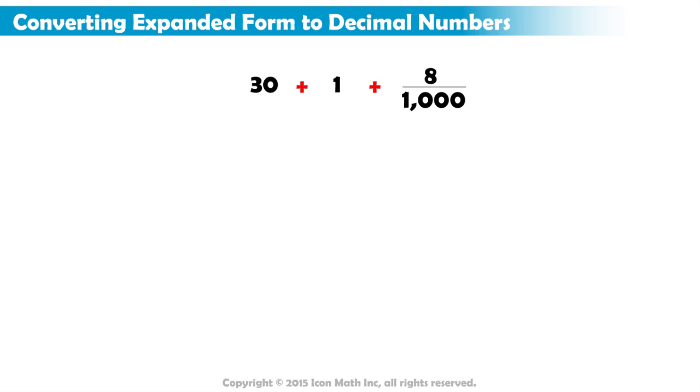This is simple. Just start with the numbers that have no denominator. These will make up the whole number part. 30 has one zero, so it is in the tens place. And 1 has no zeros, so it is in the ones place. Now we have 31 in the whole number part.